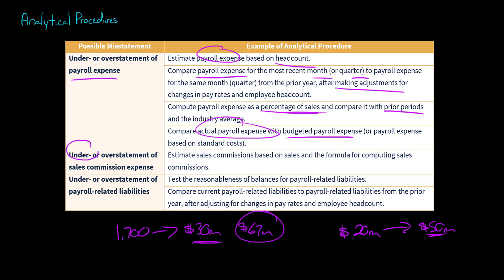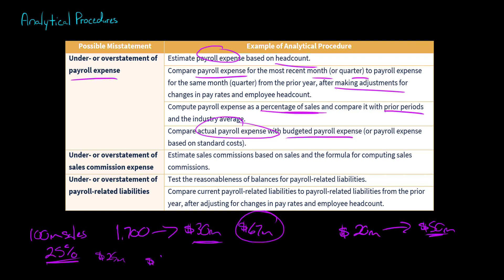When it comes to under or overstatement of sales commission expense, the auditor could identify the formula used for calculating sales commissions and see if the amount of sales commission expense actually recognized was reasonable. For example, if the company had $100 million in sales and the formula specified a 25% commission, we'd expect $25 million in sales commission expense. But if the reported sales commission expense is only $8 million, the auditor would question why only $8 million was reported when $25 million was expected.